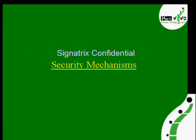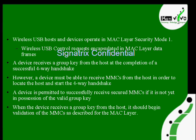Next, security mechanisms. Wireless USB hosts and devices operate in MAC layer security mode one. Wireless USB control requests are encapsulated in MAC layer data frames. A device receives a group key from the host at the completion of a successful four-way handshake. The four-way handshake is the authentication process. At the end of this process, both the device and host will have a session key.